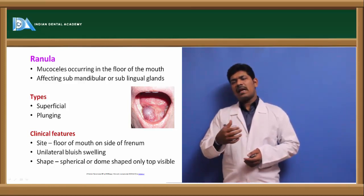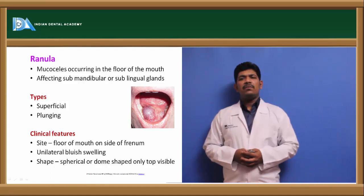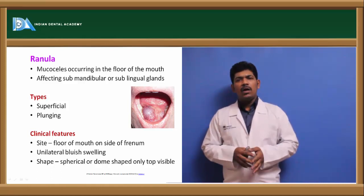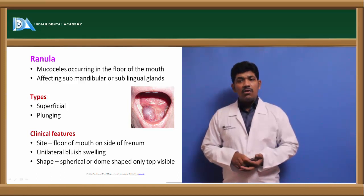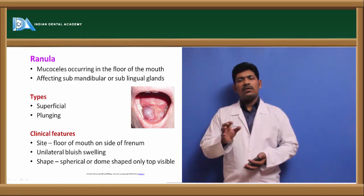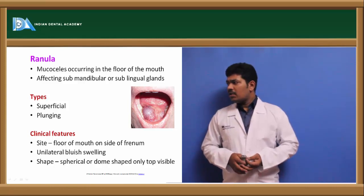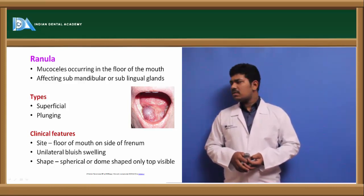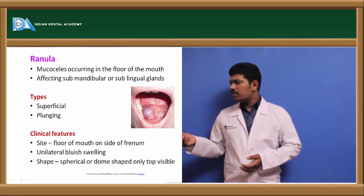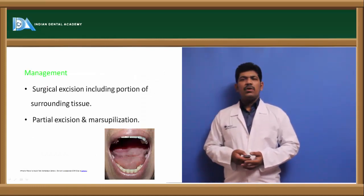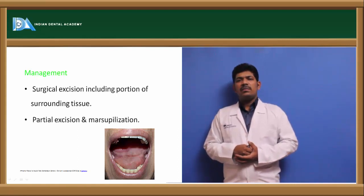A ranula is a mucocele that occurs in the floor of the mouth. The name is derived from 'Rana tigrina' — the frog's underbelly — which is bluish in color. Similarly, a ranula is bluish in color because of the superficial extravascular swelling caused by extravasated saliva. It can be superficial or plunging deep into spaces. Management is similar to mucoceles: surgical excision, marsupialization, laser treatment, or cryosurgery.